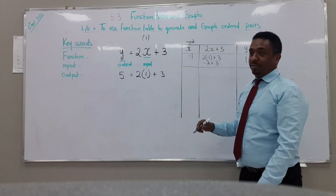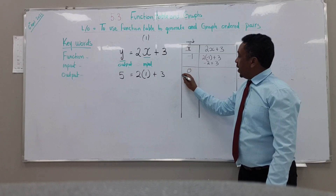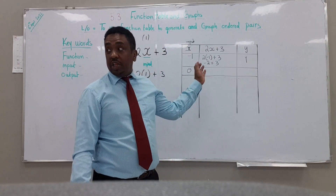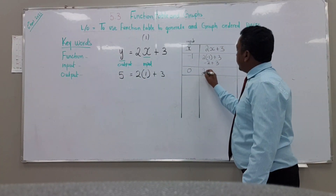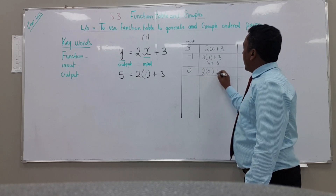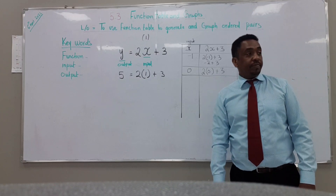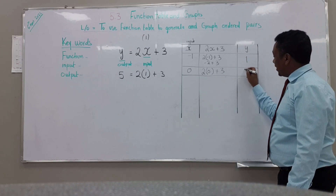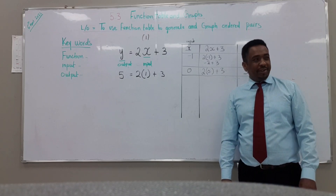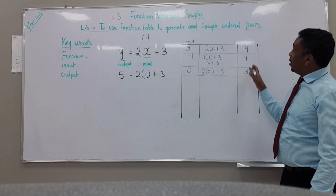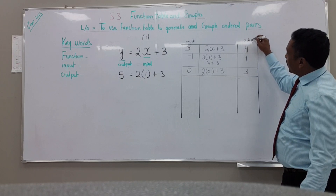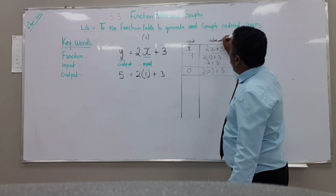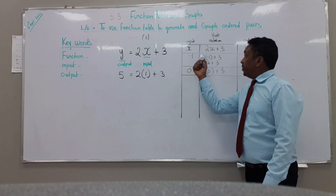Yes, let's do now zero. Because we have minus one, if I put here zero and do the same thing — replace x again with zero — then what will happen? 2 times zero is zero, plus 3 is 3. Thank you Sultan, you are correct — the answer is 3. Do you get the point? Input, output — the outcome is the y. Here is the instruction, or the rule. What is the rule? Times it by two and add it by three.